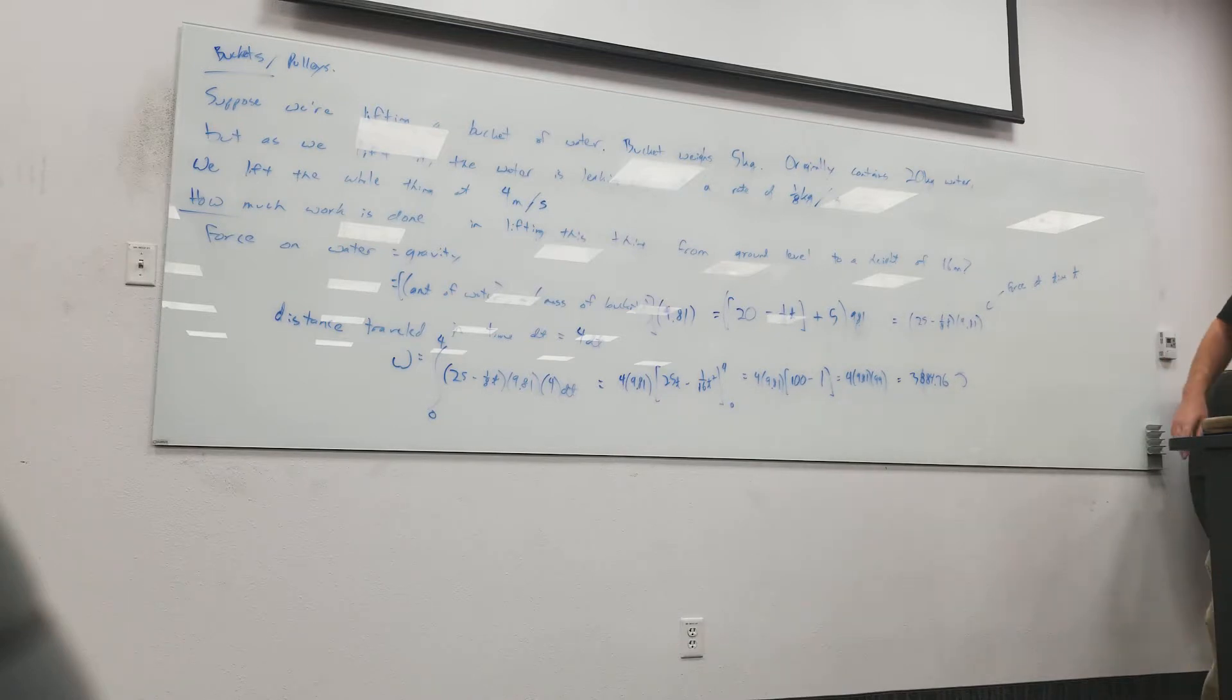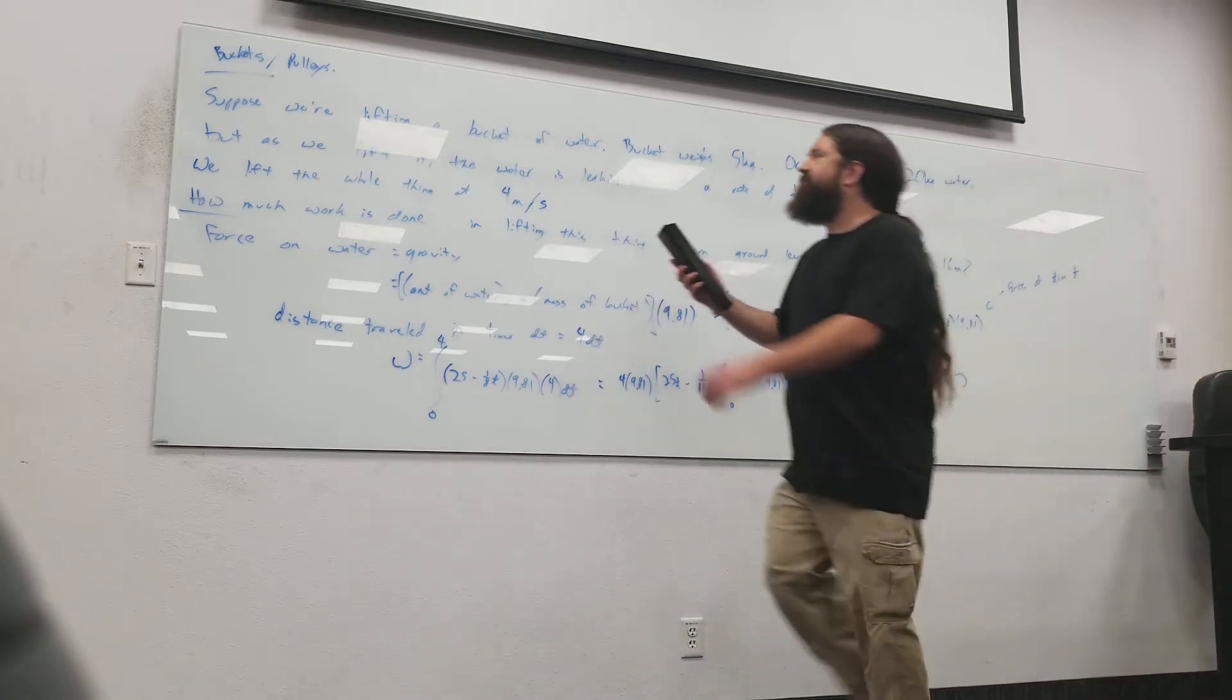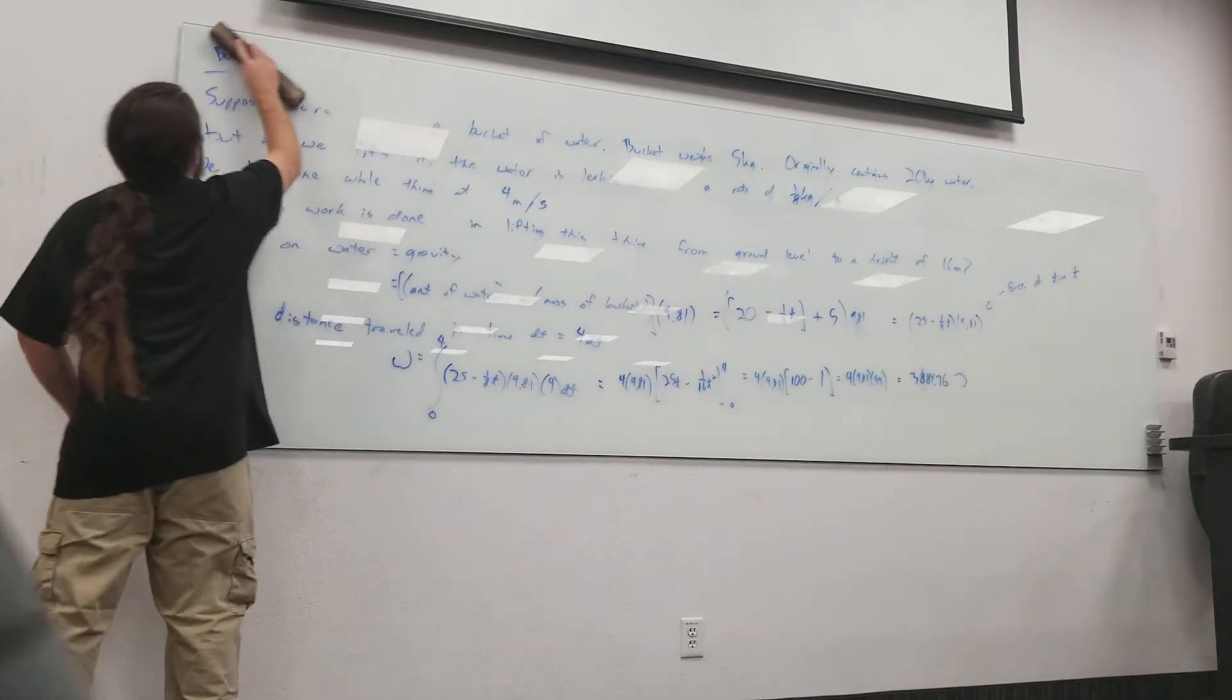How can we change this question up? I know a lot of people did these in high school physics just by getting, like, the average height times the average mass or something like that, and it would give you the same answer. Or you could take the average mass times the distance. The only reason you could do that is because the average happens to be right in the middle because mass is decreasing linearly, right? So, suppose we have a question where that's not happening.